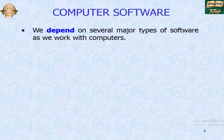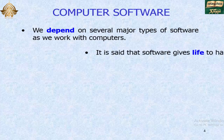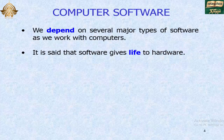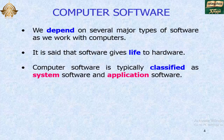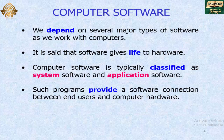Computer software. We depend on several major types of software as we work with computers. It is said that software gives life to hardware. Computer software is typically classified as system software and application software. Such programs provide a software connection between the end user and computer hardware.